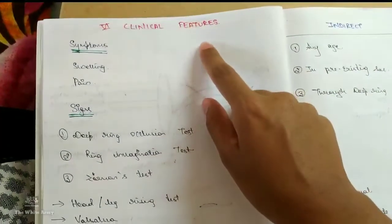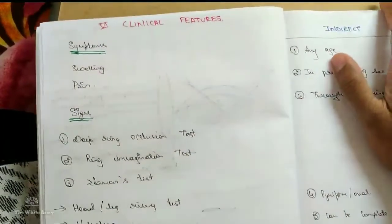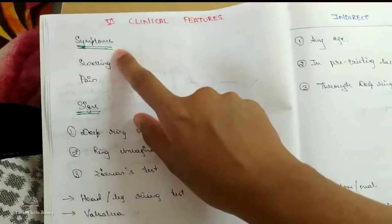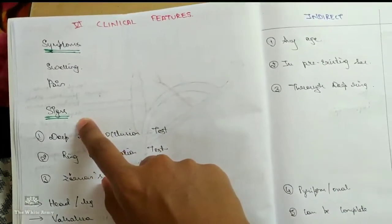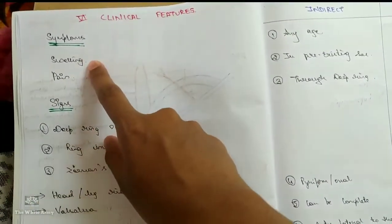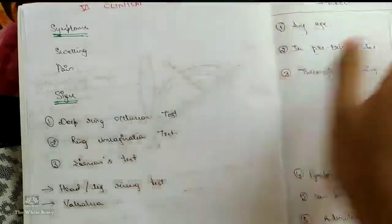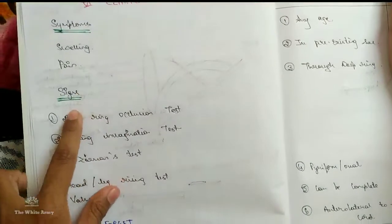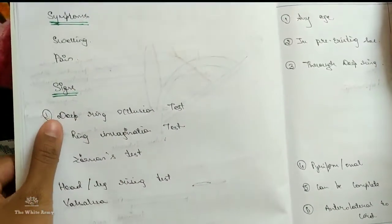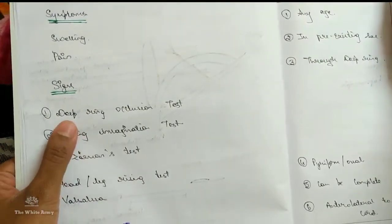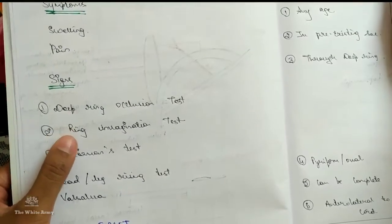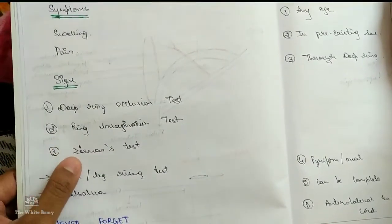Clinical features includes symptoms and signs. Symptoms mainly patient comes with swelling with or without pain. Pain if present is a dragging type of pain. And signs. Deep ring occlusion test is the most significant sign. Ring invagination test. Zieman test.